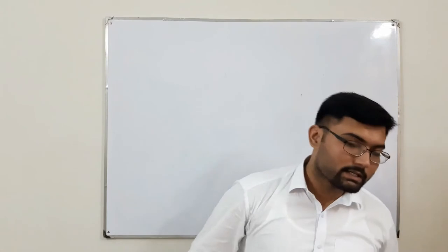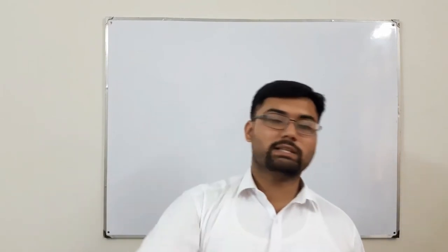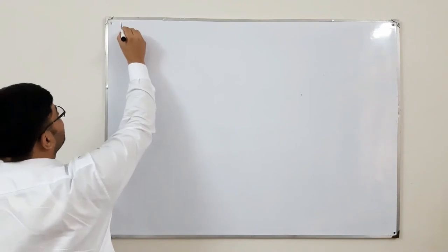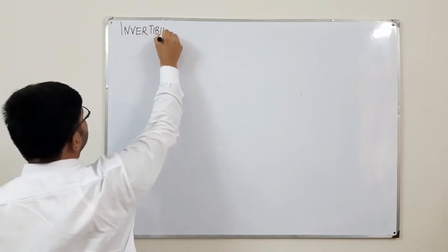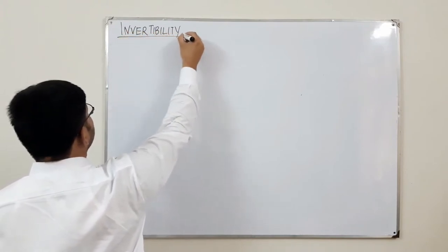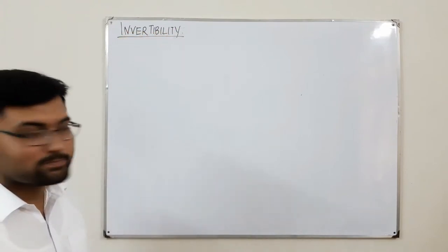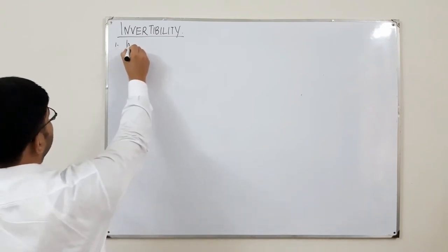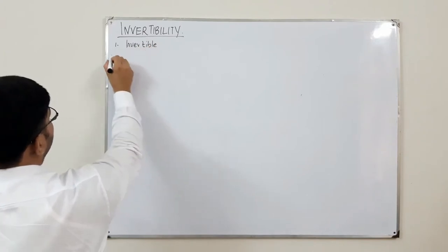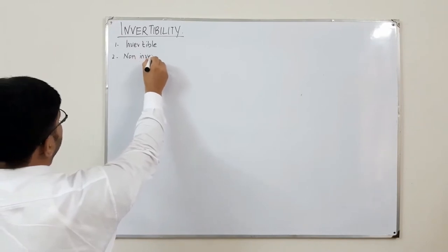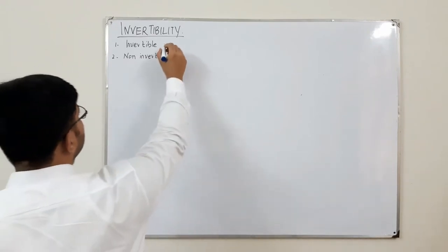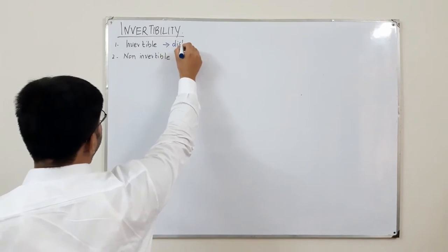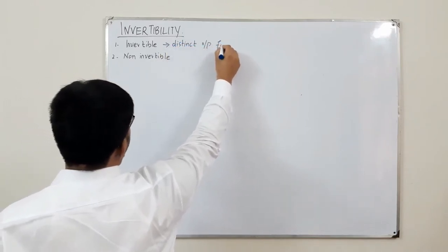Bismillah ar-Rahman ar-Rahim. Assalamu alaikum. Salah Al-Khan here, and today we have the next property of systems. Following the order of the book, the next property is invertibility. Based on invertibility, a system could be either invertible or non-invertible. An invertible system means that you have distinct outputs for distinct values of inputs.